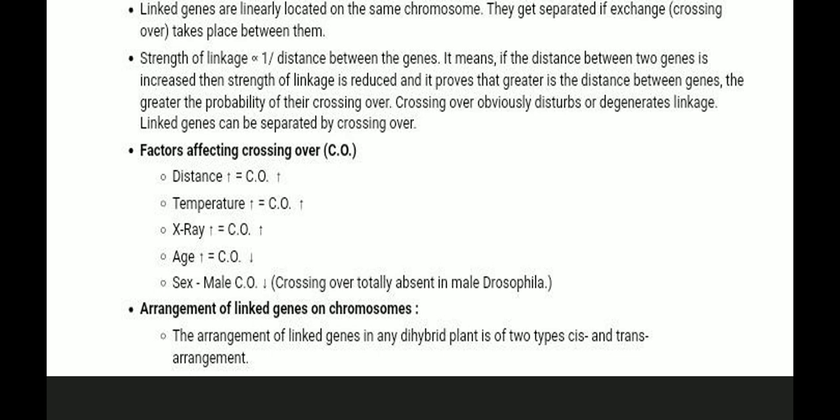If the strength of linkage is reduced, the distance between the two genes is increased — this means they are inversely proportional. If the distance between two genes is increased, then the strength of linkage is reduced. Greater distance between genes means a greater probability of crossing over.